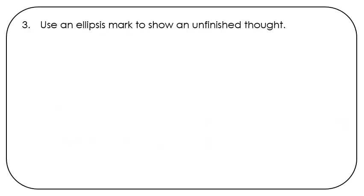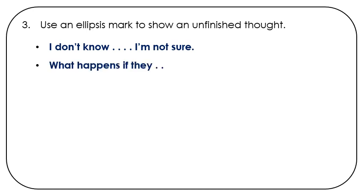Use an ellipsis mark to show an unfinished thought. For example: 'I don't know...' or 'I'm not sure...' For a question with an unfinished thought — 'What happens if they...' — this is how you use an ellipsis with a question mark: use three periods and then the question mark.